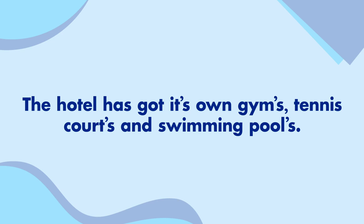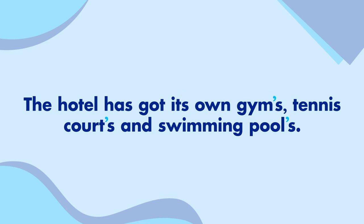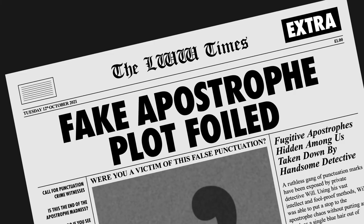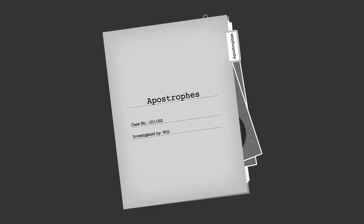Let's look at one more sentence. 'The hotel has got it's own gym's, tennis court's, and swimming pool's.' I can see four apostrophes. The first one is in 'it's' — but this time it's not a contraction of 'it is'; it's a possessive pronoun, so that apostrophe is wrong. The second apostrophe is in the plural word 'gyms'. It's not a contraction and nothing belongs to a gym here, so that's wrong too. The third and fourth apostrophes in the plural words 'courts' and 'pools' have the same problem, so they're both wrong too. Those pesky punctuation marks didn't stand a chance, and just like that, this case is closed.